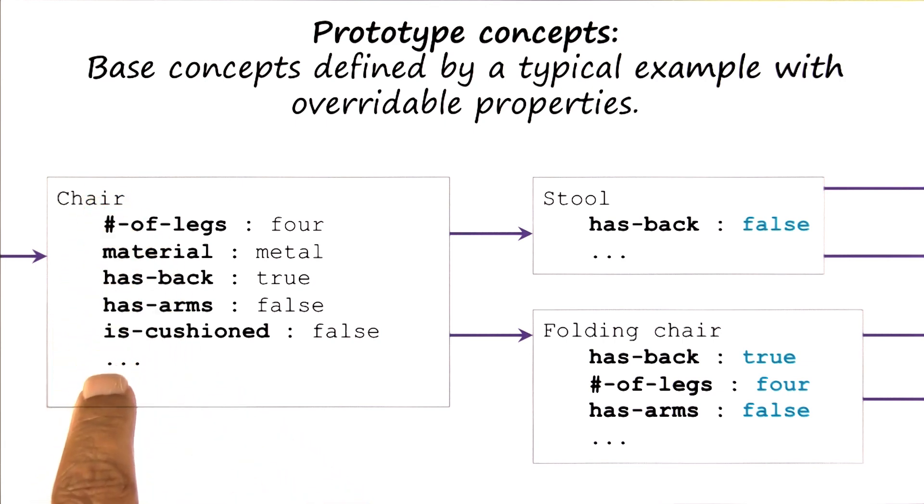The notion of default in frames is closely connected to the notion of typical properties in concepts. So chair has this prototypical notion with some typical properties, and we can think of this as having default values. By default, we assume the number of legs is four, the material is metal, and so on.